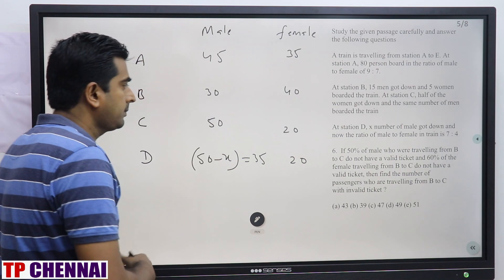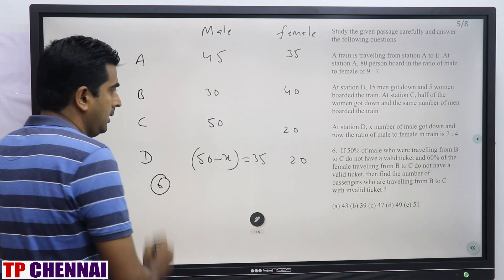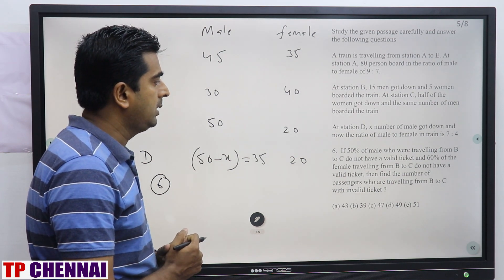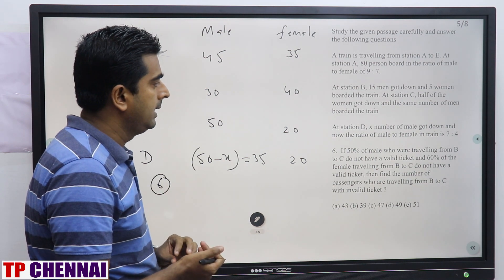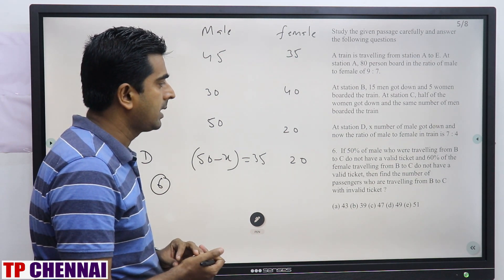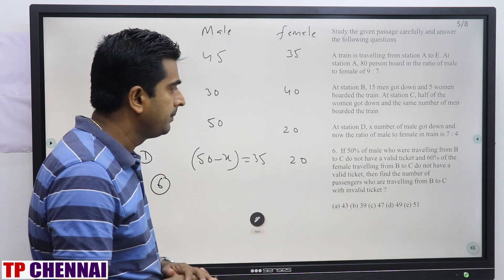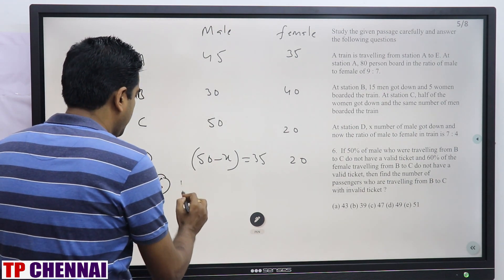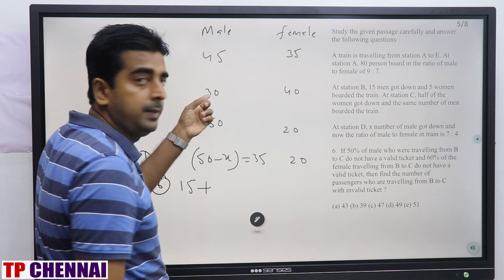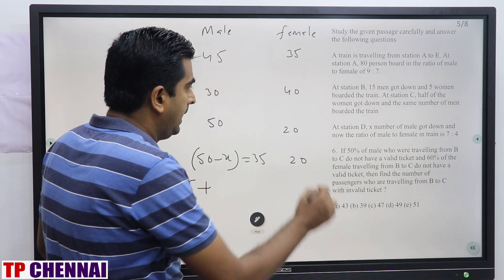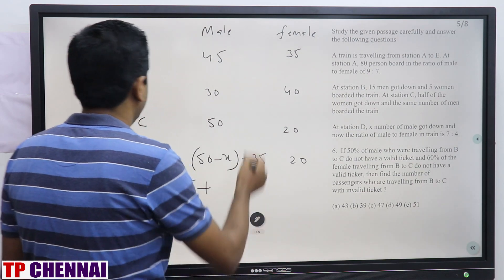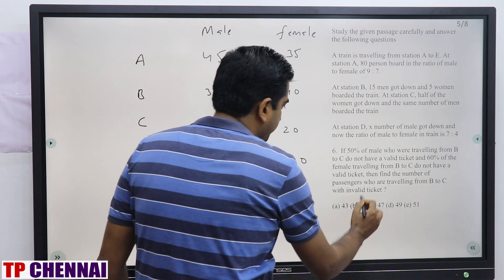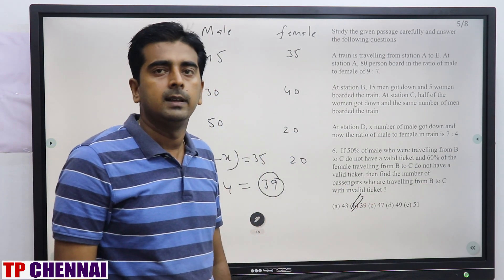Question 6: If 50% of males traveling from B to C do not have a valid ticket, and 60% of females traveling from B to C do not have a valid ticket, find the total number of passengers traveling from B to C with an invalid ticket. From B to C: males = 30, so 50% = 15 invalid. Females from B = 40, so 60% of 40 = 24 invalid. Total invalid = 15 + 24 = 39. That is the second option.